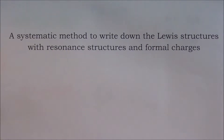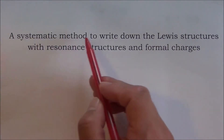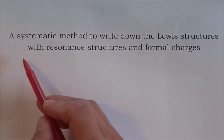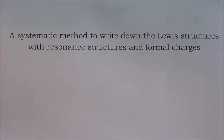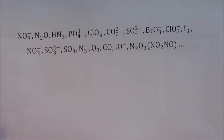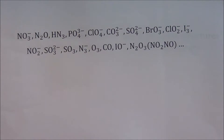Good morning, I'm Dr. Huang. Today, I'm going to teach you a systematic method to write down the Lewis structures with resonance structures and formal charges. There are a lot of molecules and ions whose Lewis structures are very difficult to write down correctly. If you can follow the procedures I'm teaching you here, it will be relatively easy and fast to write down the correct structures with resonance structures and formal charges for any molecule or any ion.